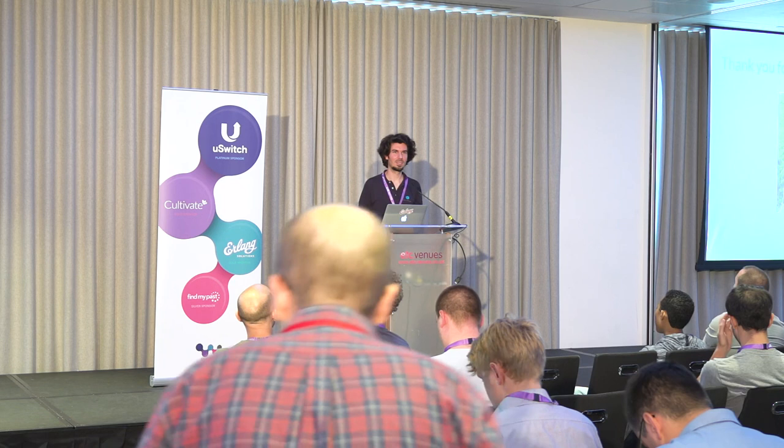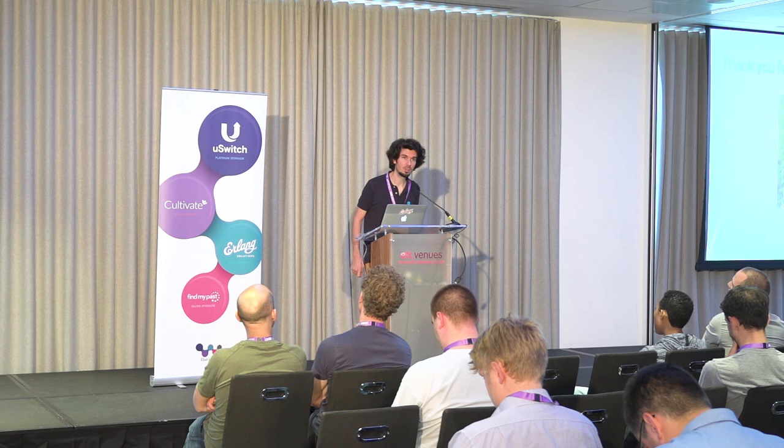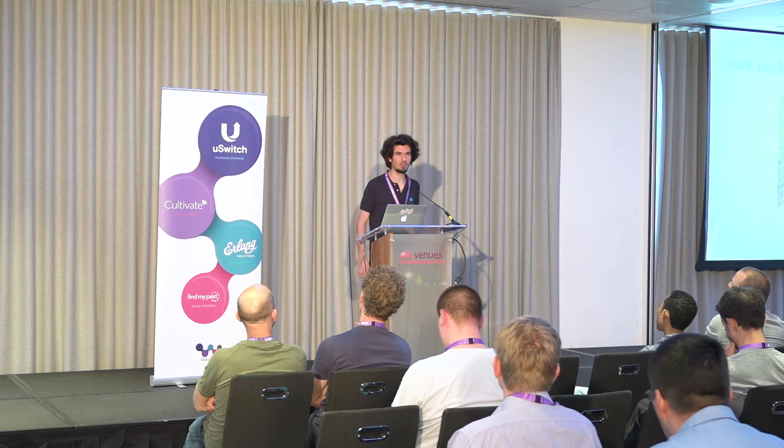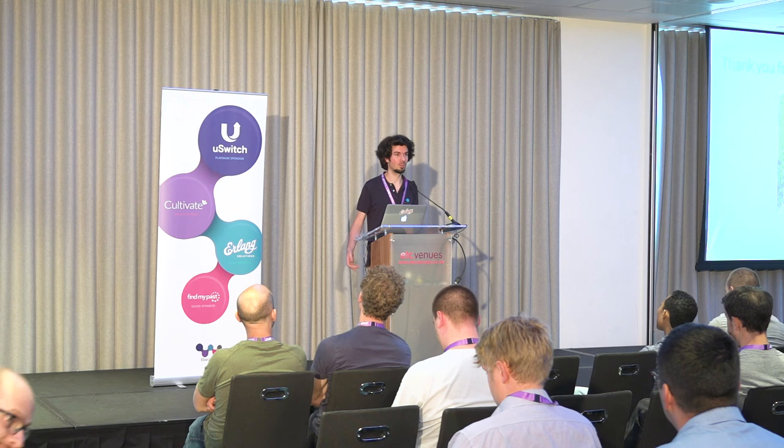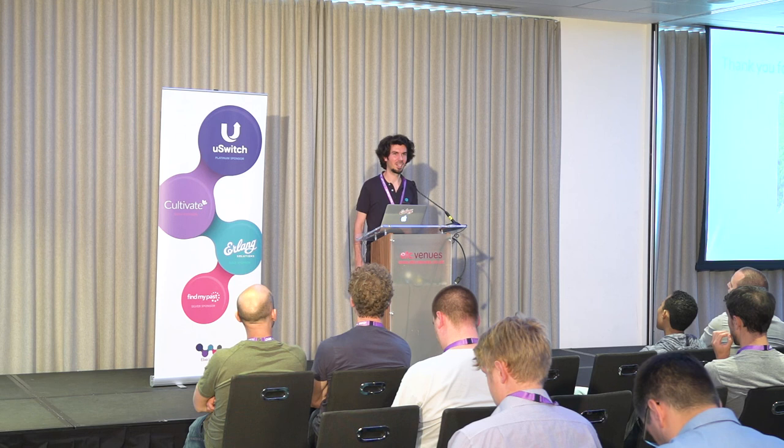Regarding regular monitoring: in this example we use Datadog, and also Graphite. There are a couple of other options — I know there is AppSignal or Prism, which are Elixir-specific performance monitoring systems.